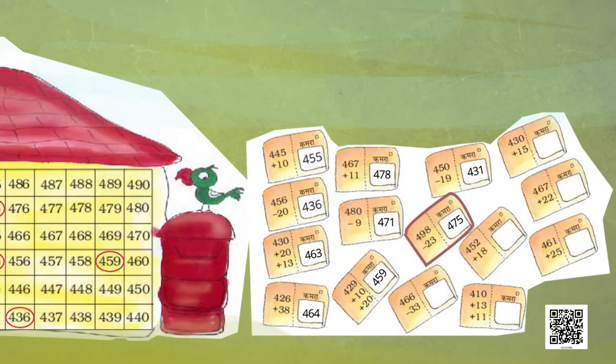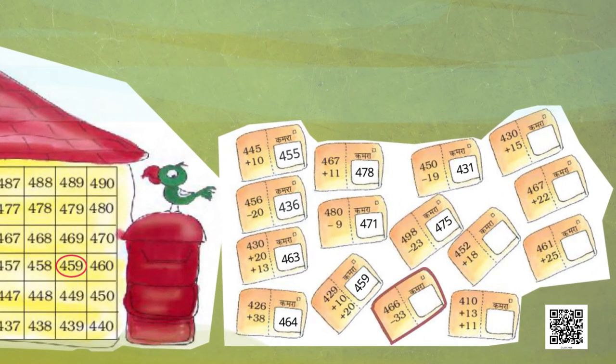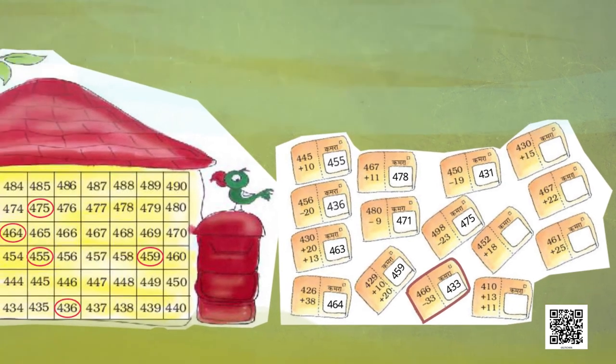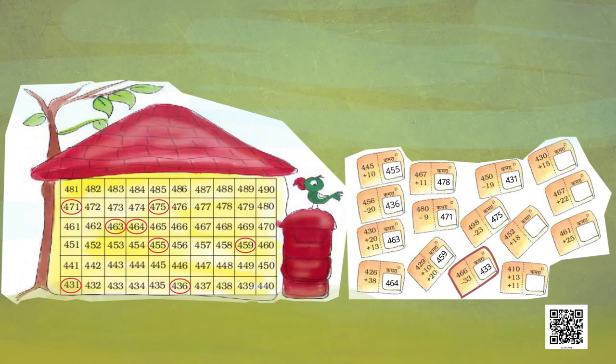Look here — this envelope has 466 minus 33. So what comes? Yes — 433. Very good! Let us deliver this to room number 433.